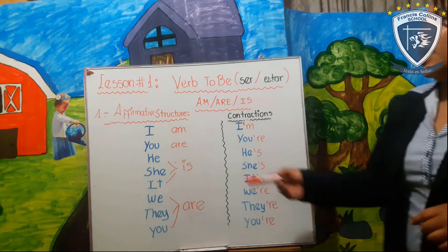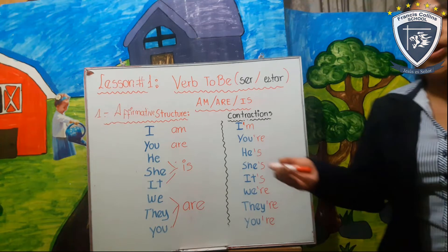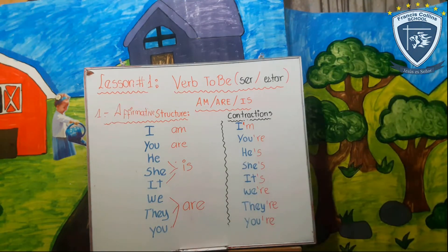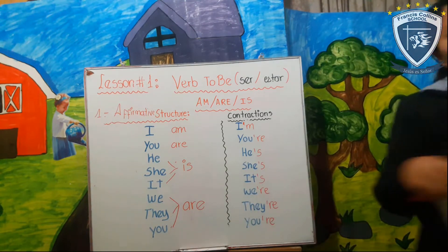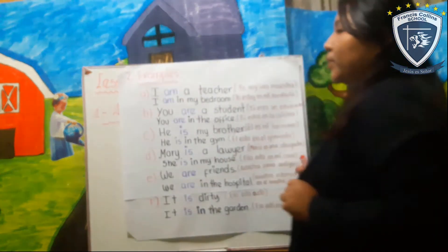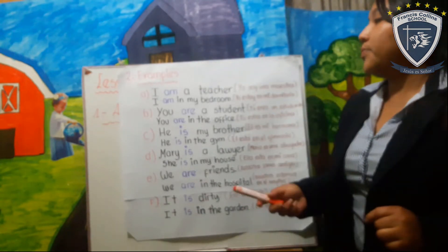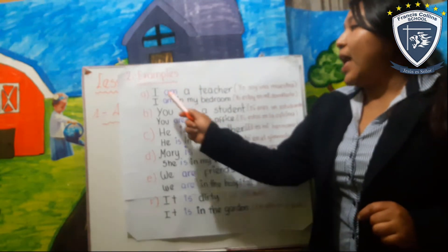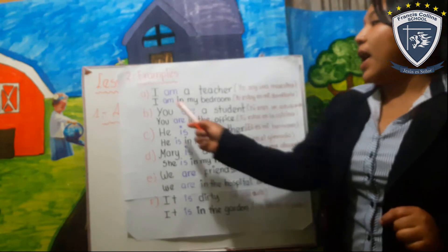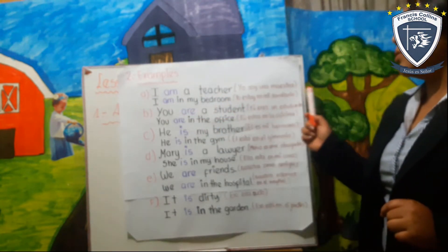This is the contractions and this is the affirmative structure. Now we're going to check some examples. Here we have some examples. Letter A: I am a teacher — yo soy una maestra. I am in my bedroom — yo estoy en mi cuarto.